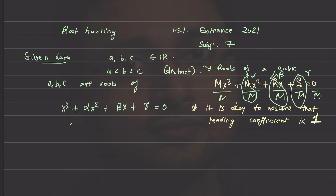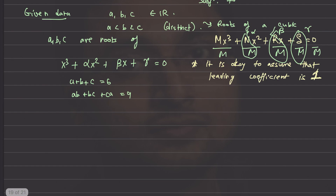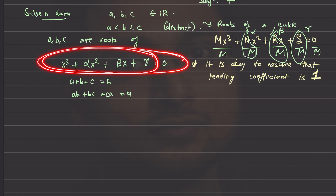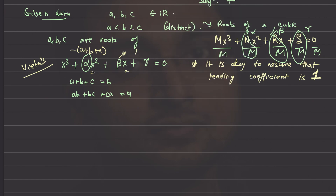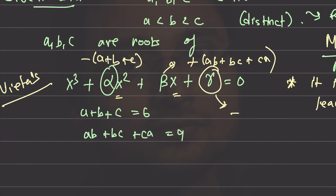It's also given that a + b + c = 6 and ab + bc + ca = 9. This tells us more information about the polynomial because by Vieta's formula, α = −(a + b + c). If you don't know Vieta's formula, you can look it up in a standard algebra textbook. So the coefficient of x² is the negative of the sum of roots, the coefficient of x is ab + bc + ca, and γ is −abc, the product of roots.